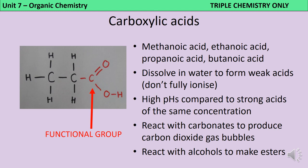Carboxylic acids dissolve in water to form weak acids — in other words they don't fully ionize. This means they have higher pHs compared to strong acids of the same concentration. So a one molar solution of ethanoic acid will have a higher pH than a one molar solution of hydrochloric acid, although still below seven because it is still an acid. Carboxylic acids react with carbonates to produce carbon dioxide gas bubbles, which you could test for with lime water, and they react with alcohols to make esters.